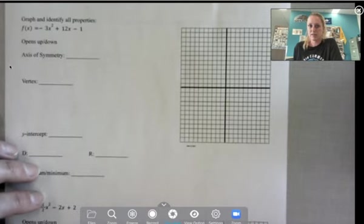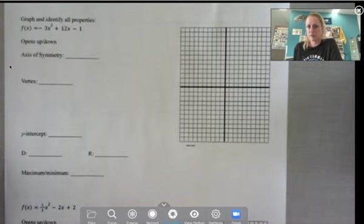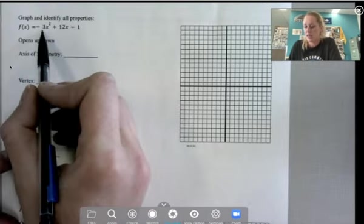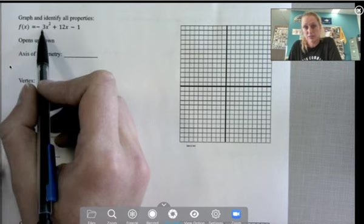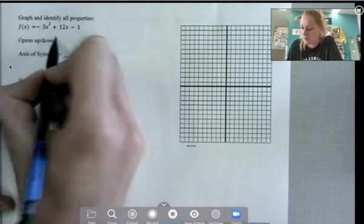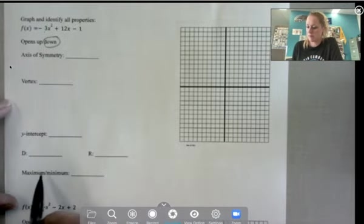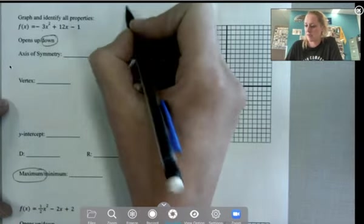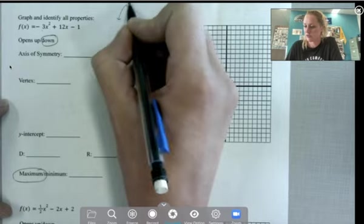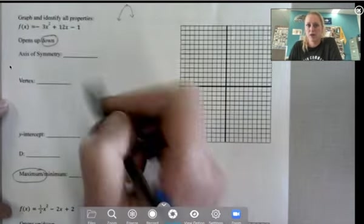All right. So we're going to go ahead and graph and identify all these different parts. So the first thing I look at is a. If it's positive or negative, that tells me how it opens. So because it's negative, it's going to open down. Which also means it's a maximum, right? If it opens down, it has a point at the top.